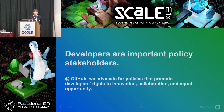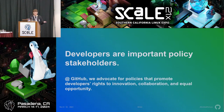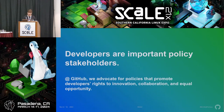Oftentimes open source is misunderstood, scapegoated, or laws are written in ways that can break open source. And obviously the many downstream dependencies of open source collaboration — making sure that people are able to collaborate and connect across different borders, different countries — all of those things is very important.